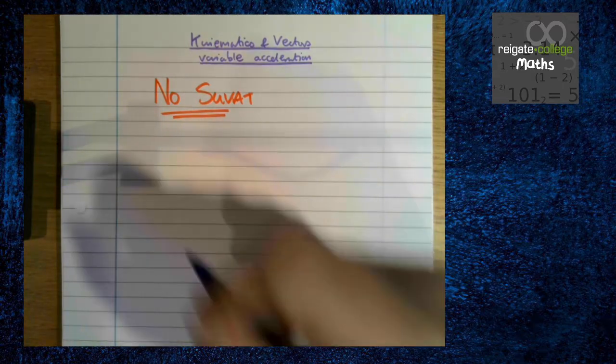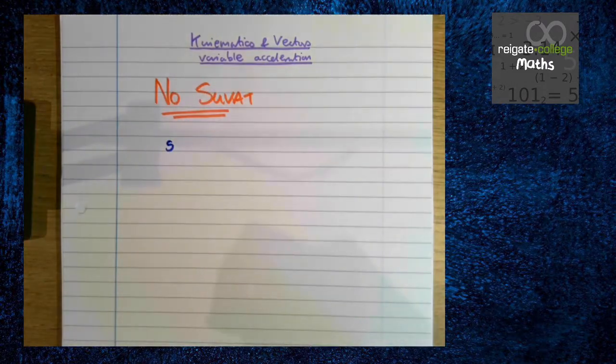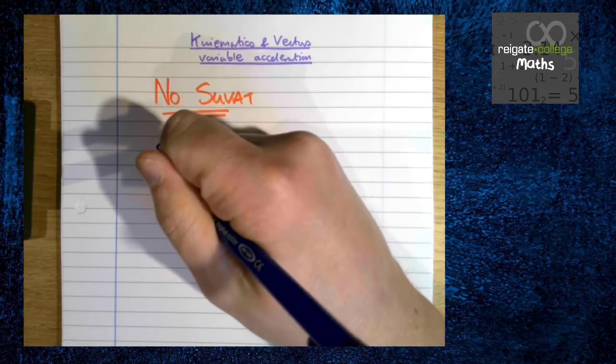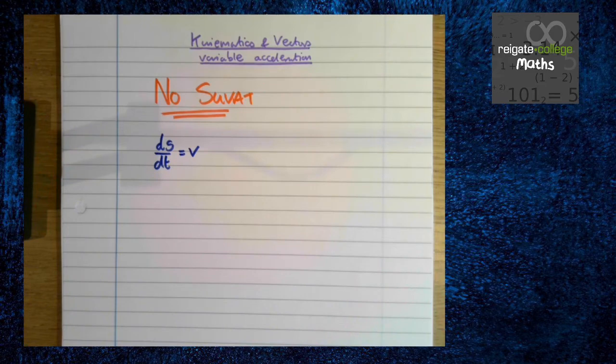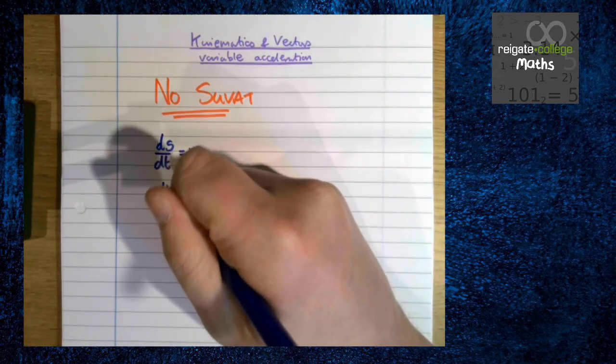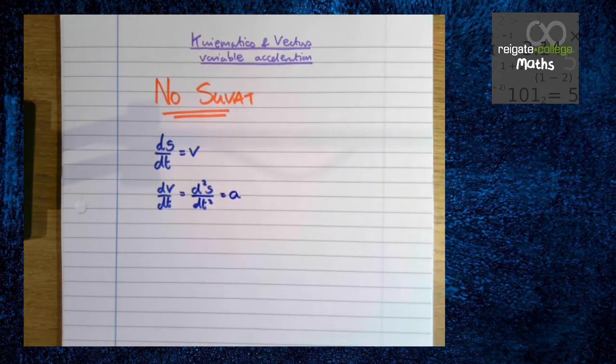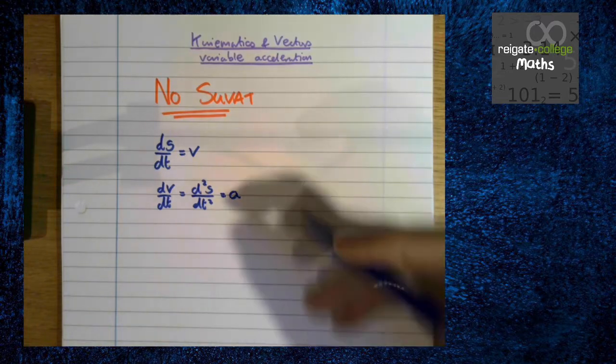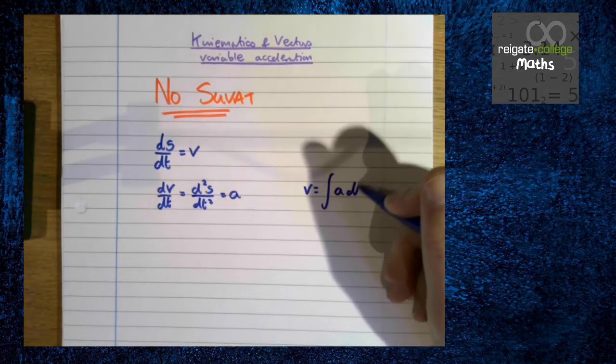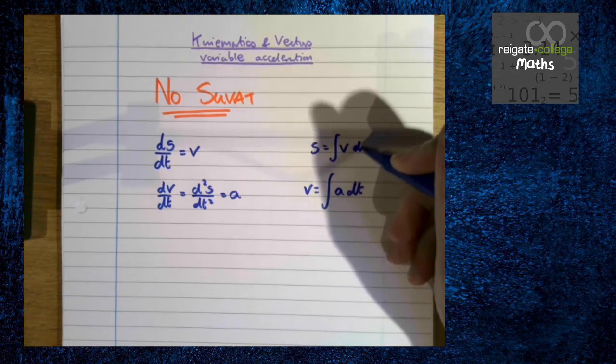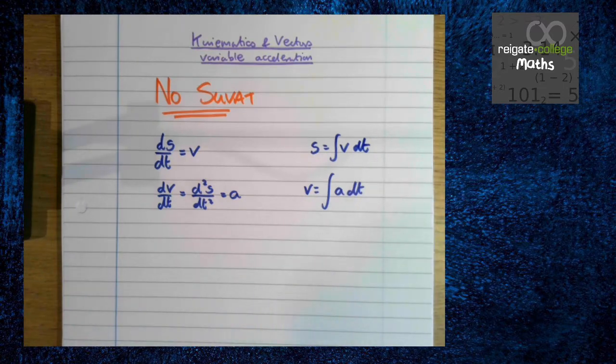The thing to remember is if we're given displacement how do we find velocity? Well we differentiate with respect to time. If we need to find acceleration we differentiate velocity which is the same as differentiating displacement twice. Likewise we can go the other way so velocity is the integral of acceleration with respect to t and displacement is the integral of velocity with respect to t. Using these properties you can basically work out all of these different formulae from given formulae and so we're going to go through a few examples to have a look at those.